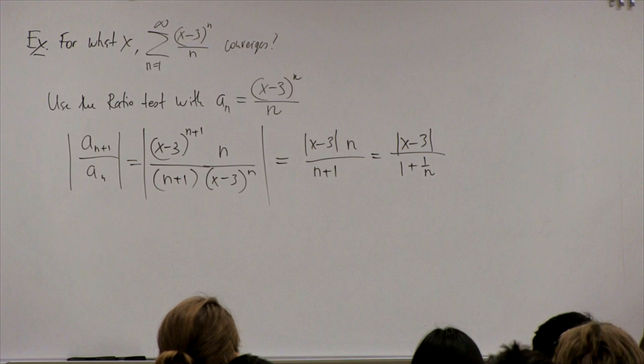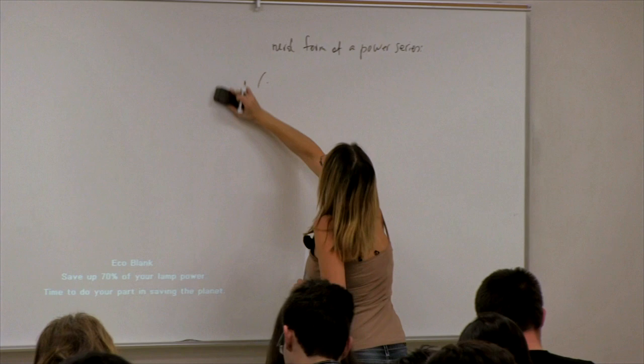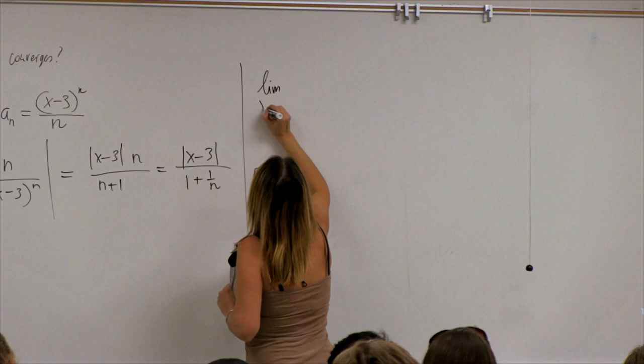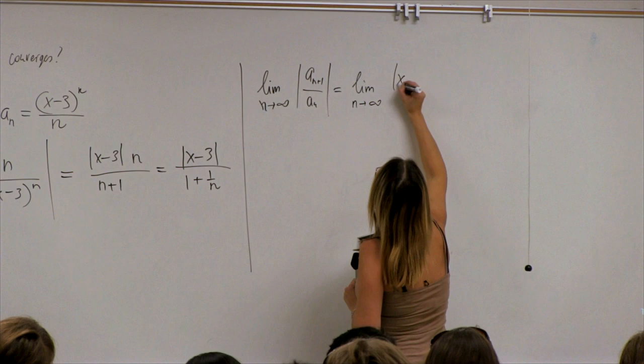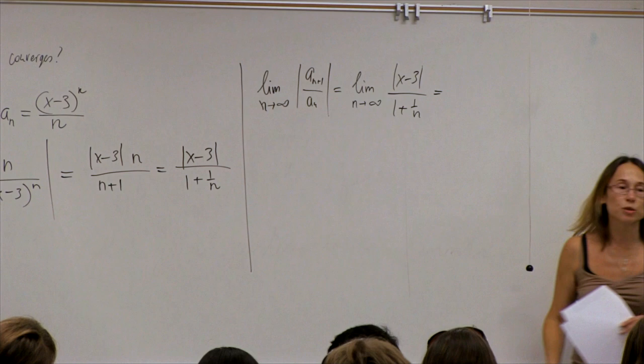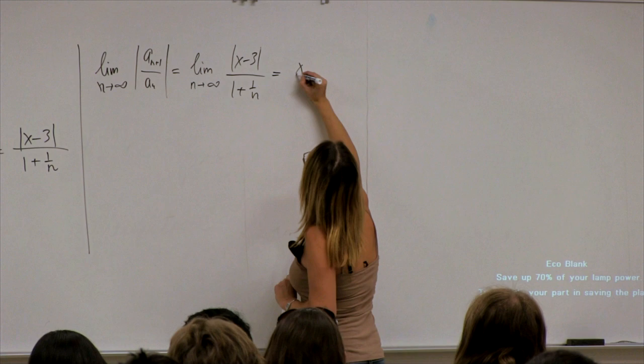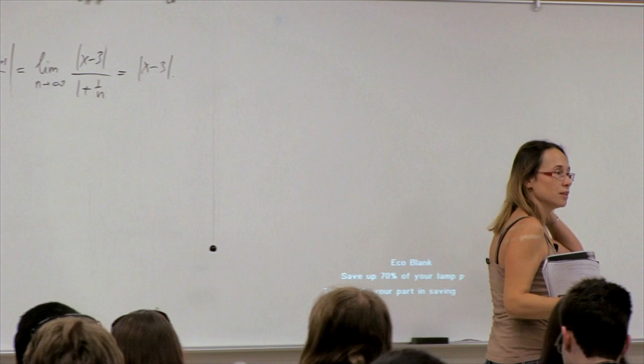To apply the ratio test, I calculate the limit of this quantity as n goes to infinity. The limit is simply |x−3|, since 1/n goes to 0. Now we remember the conditions of the ratio test.